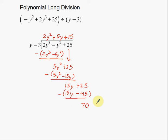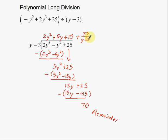There's nothing else to bring down, so we're done. 70 is the remainder. We write it as a fractional remainder: plus 70 over the divisor, y minus 3. This top part — 2y² plus 5y plus 15 — is our solution. The polynomial doesn't divide evenly, but that's the process.